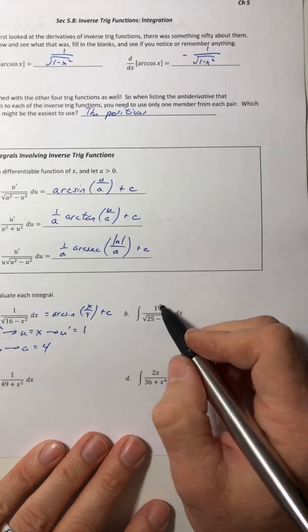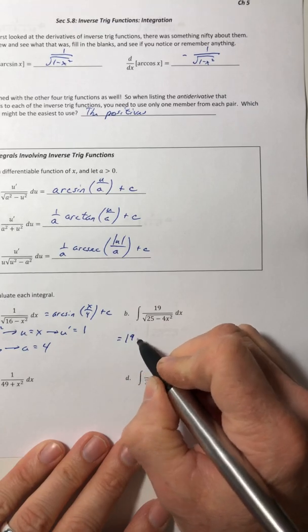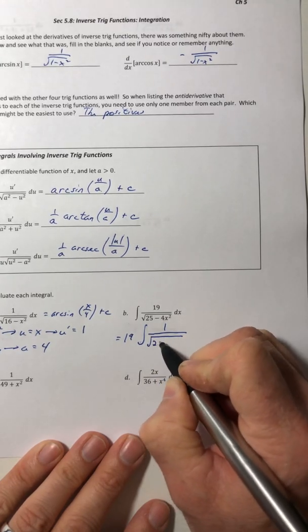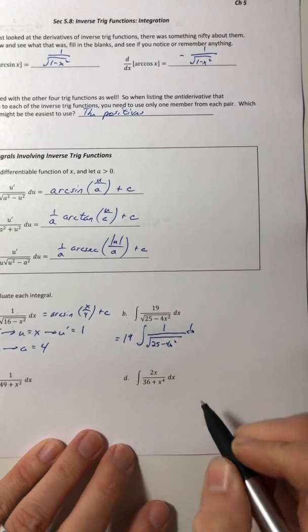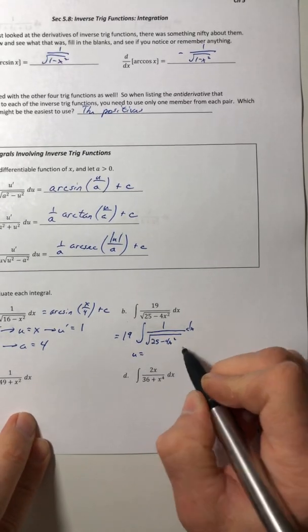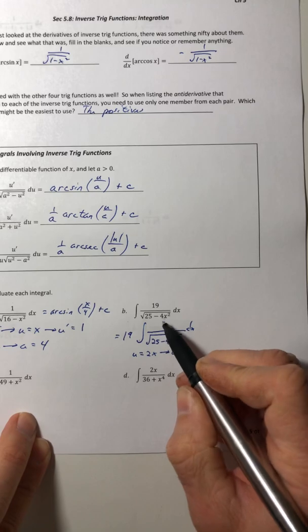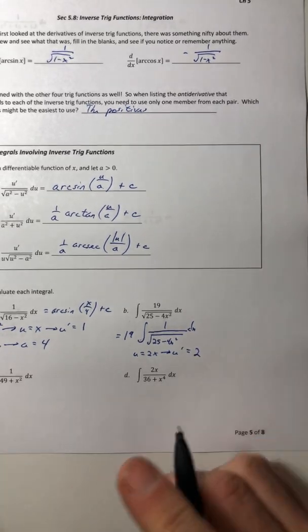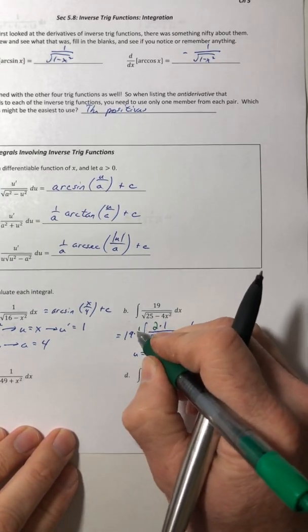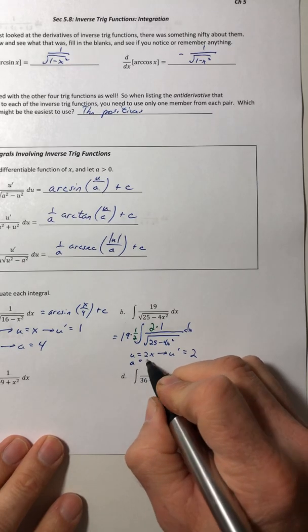Let's try part b. So we're going to factor out the 19. We don't need it in there, so just pull it out. And again, you're looking for the u and the a. So the u, I got a square root of this. So the u is 2x, which means the u prime, or what I want the numerator to be, is actually a 2. So I need to multiply a 2 to the top to make it a 2, which means on the outside, I need that 1 half.